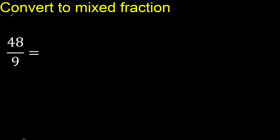First, the same number here — 9, 9 — multiply by which number is nearest to 48 but not greater.